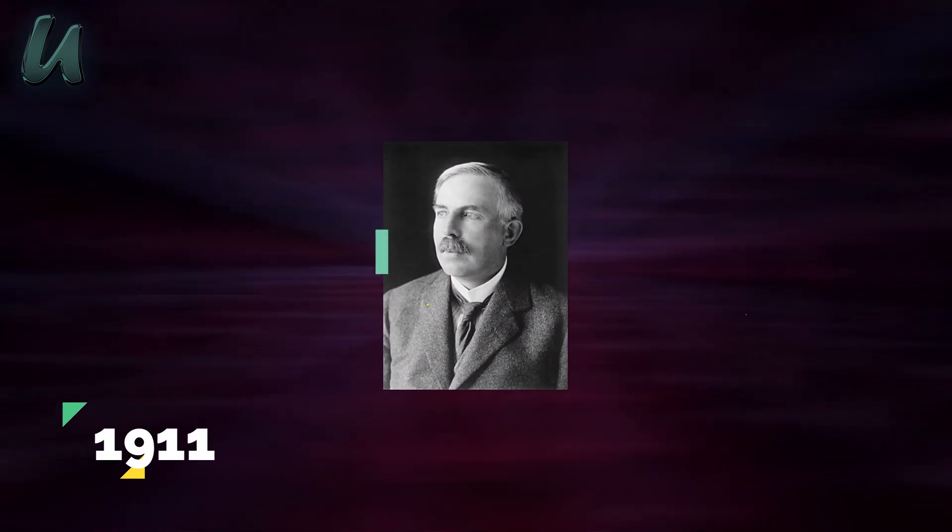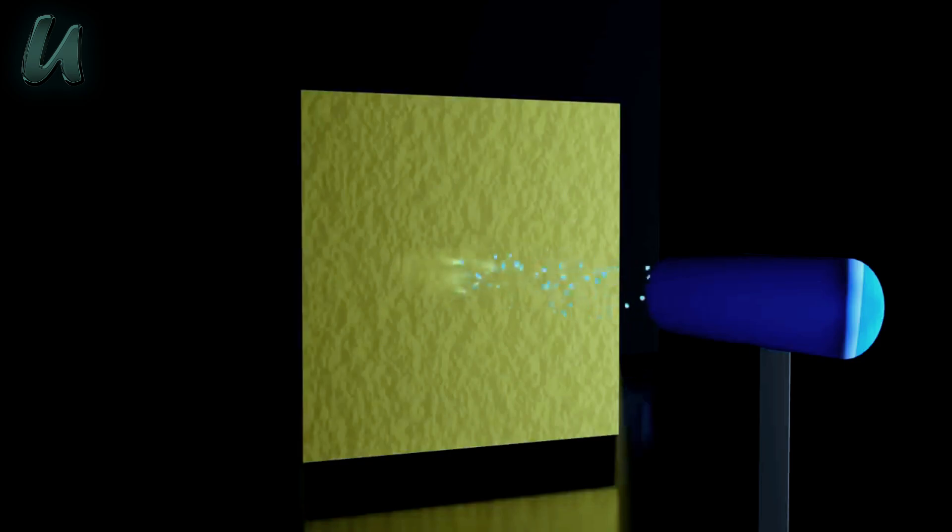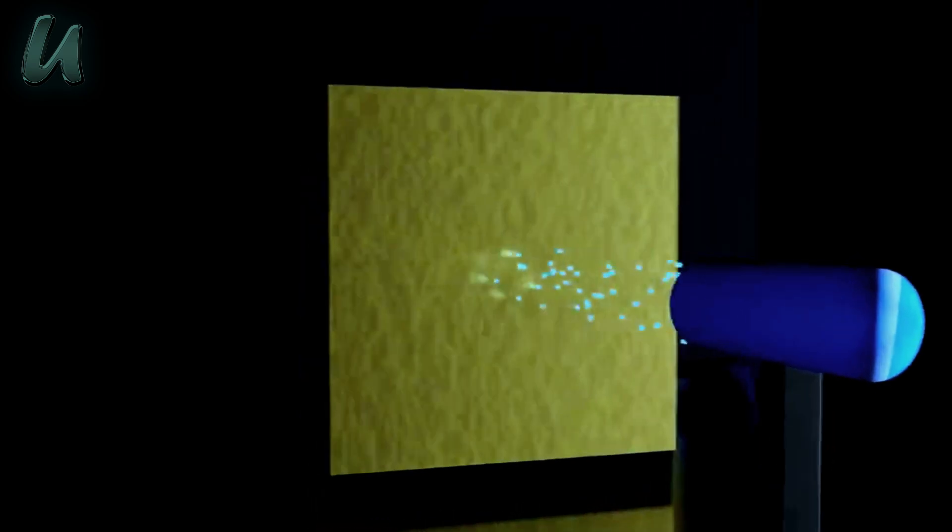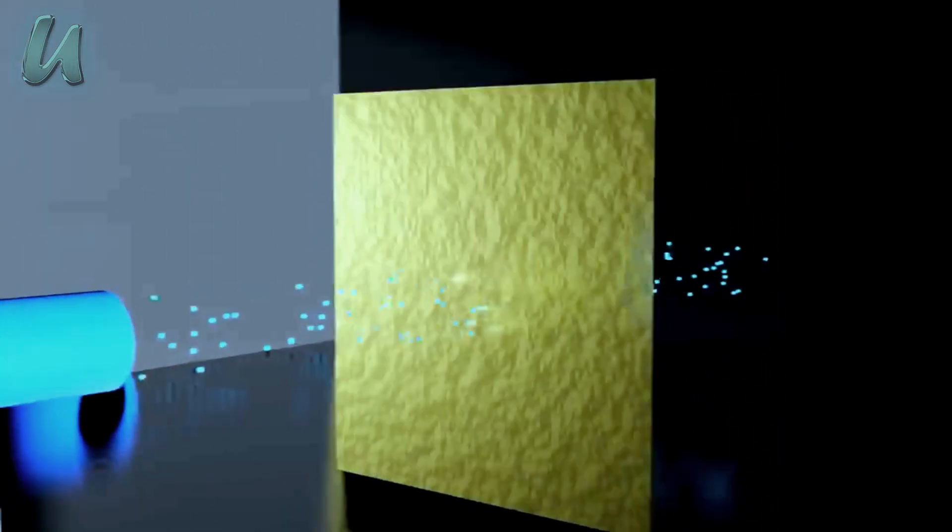In 1911, Ernest Rutherford conducted an experiment in which he shot positively charged alpha particles on a very thin sheet of gold foil. What he found was that most of these particles pass straight through the gold without any deviation. This meant that atoms were just largely empty space.